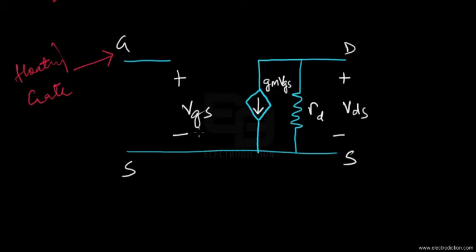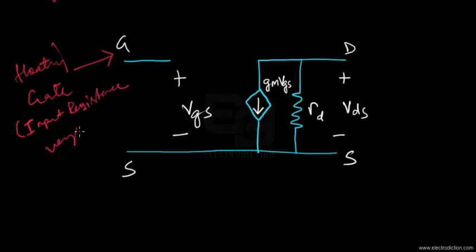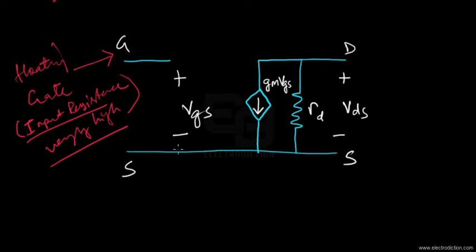The FET input resistance is very high, as we know from previous tutorials. In case of a JFET, we reverse bias the gate and channel junction, and in case of MOSFETs there is an insulation layer between the substrate and the gate terminal. Because of this, we have a very high input resistance at the gate input terminal.